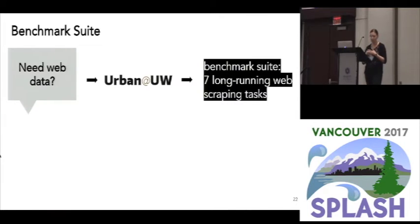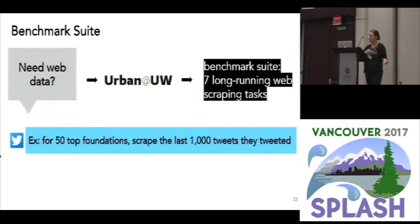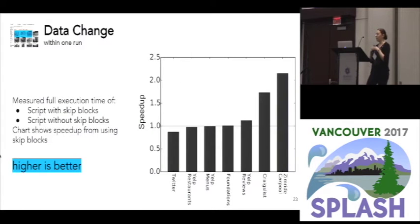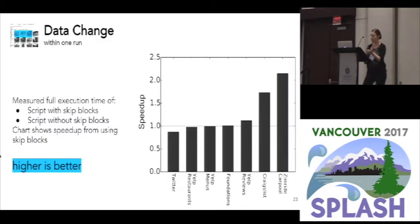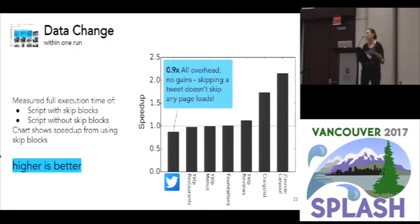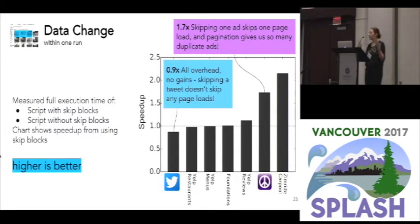For evaluation, there were no existing benchmark suites of long-running web scraping tasks, so we emailed a mailing list of social scientists from different backgrounds and asked who needs web data. The result was seven long-running web scraping tasks — for example, for the top 50 foundations scrape the last 1,000 tweets, and we've already talked about scraping all Seattle apartment listings from Craigslist. We look at how those tasks are affected in each of our three scenarios by the use of skip blocks. First, data change: looking at cases with duplicate Craigslist ads within a single run. We compare script performance with versus without skip blocks on Twitter and Craigslist. Twitter is basically the worst case for us — we see all the overhead with none of the gains, because by the time you reach a tweet all information is already there and there's nothing to skip, while you're still paying the overhead of talking to a remote commit log.